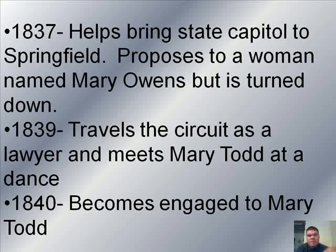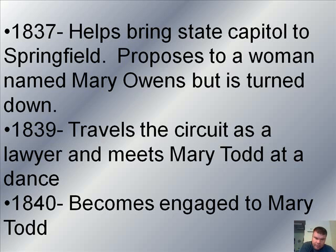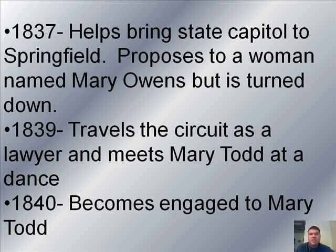In 1839, he travels what was called the circuit as a lawyer, which means he would travel from county to county to different courthouses and work on cases. He comes back to Springfield, and at a dance there he meets Miss Mary Todd from Kentucky. Mary Todd was a very well-known person — kind of the person a lot of young men were looking for in a wife. She had very strong opinions, was very much into politics, and she saw Abraham Lincoln as someone she adored. In 1840, Abraham Lincoln becomes engaged to Mary Todd.